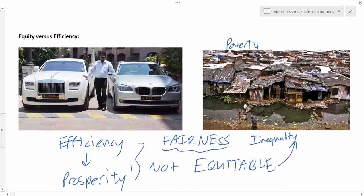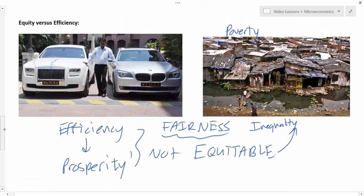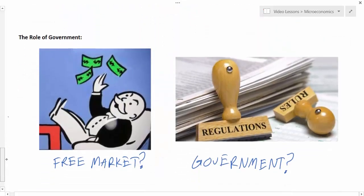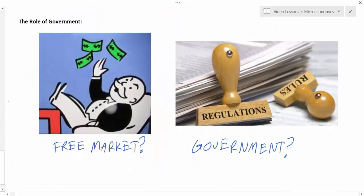Next, we introduced and discussed equity versus efficiency — policies that promote the efficiency of free markets may result in inequity and inequality, exacerbating the poverty that already exists among billions of people on the planet today. Finally, to tie all these key themes together, we introduced the role of government. Throughout our study of economics, you will constantly be examining the extent to which government can improve the efficiency and equity of the free market system.